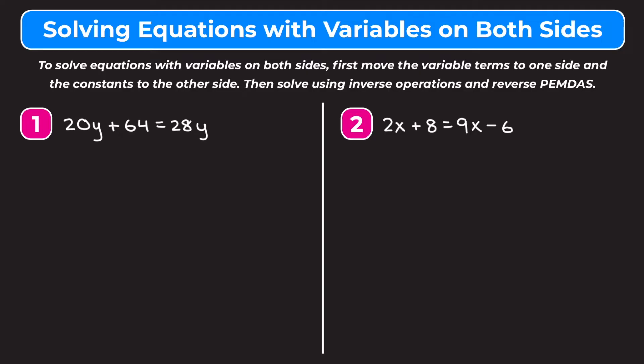For example one, we want to start by getting the 20Y and the 28Y on the same side of our equation. I want to move the 20Y from the left side to the right side, because I only have one constant and it's on the left side. So I want to put the constants on the left and the variables on the right. Because it's a positive 20Y, I'm going to subtract 20Y from both sides. On the left, 20Y minus 20Y is 0, so I'm left with 64. On the right, 28Y minus 20Y is 8Y.